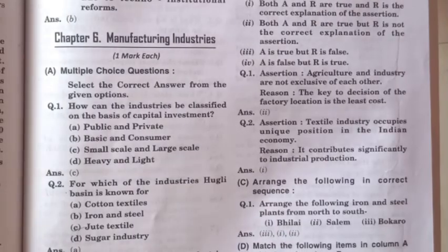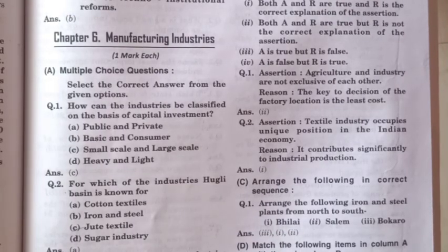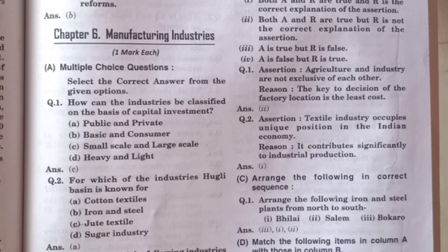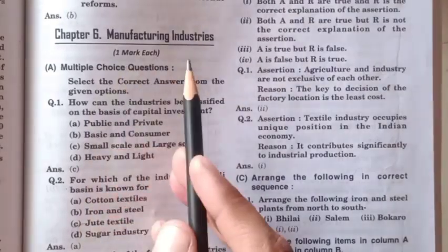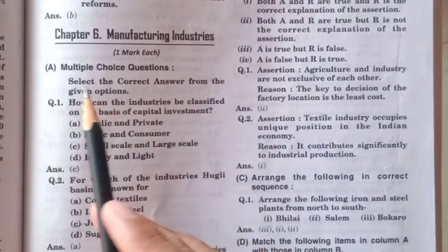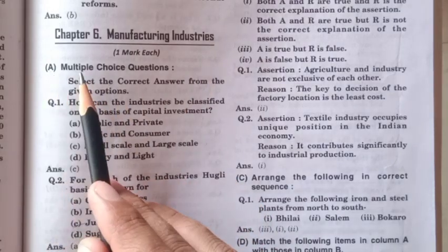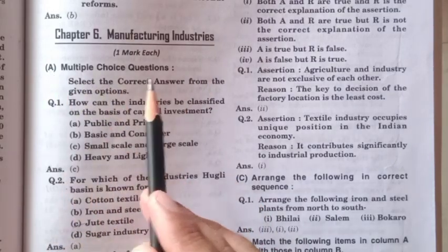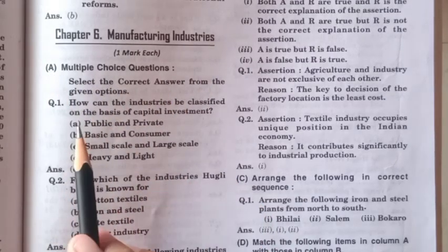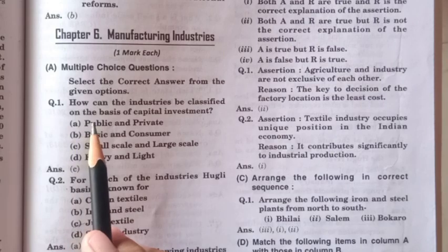Good morning students. Today we are doing the objective type questions of chapter 6, manufacturing industries of geography. The first category is multiple choice questions, and question number one is: